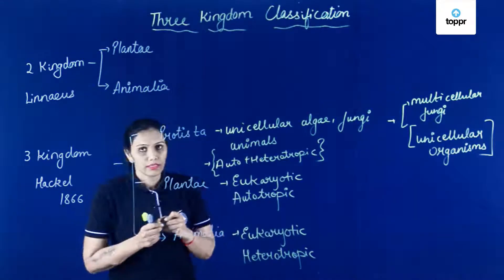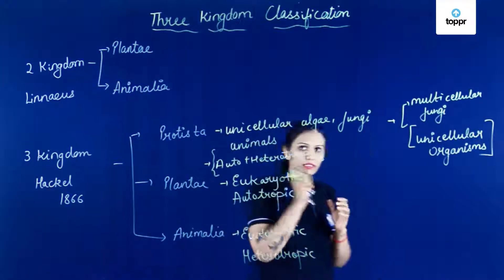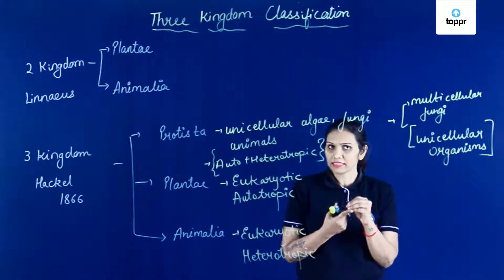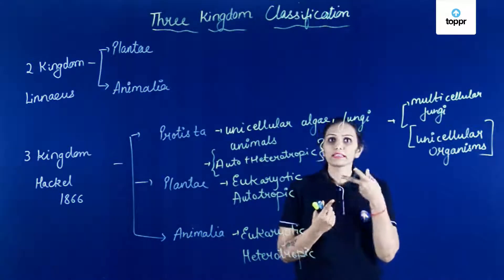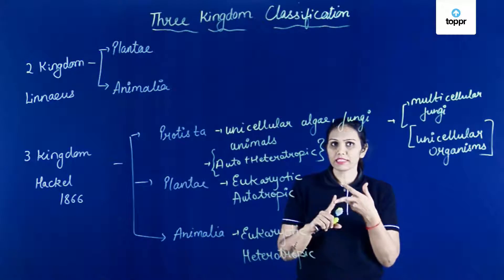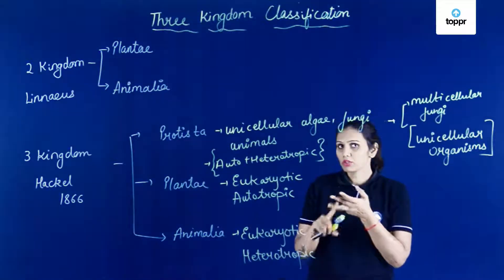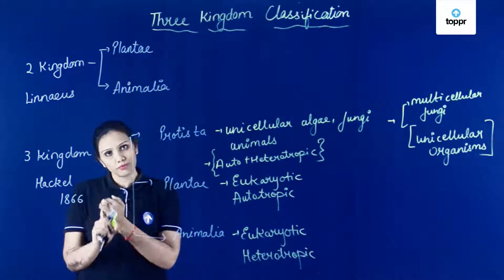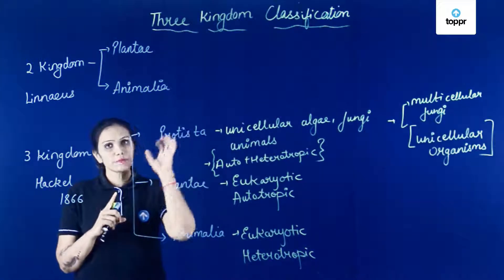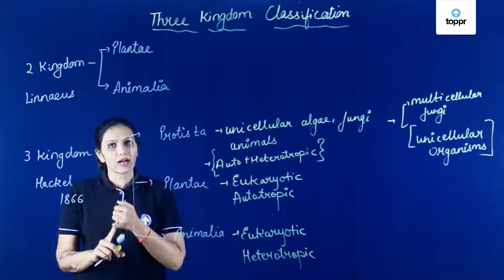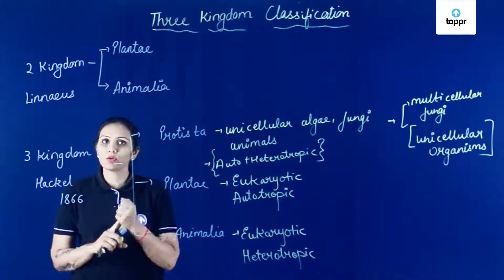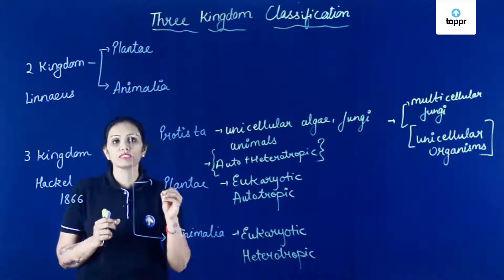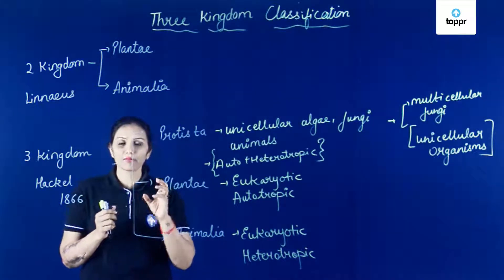Aur Kingdom Protista ke andar rakhe unhone woh forms — Euglena, slime molds — which are both auto and heterotrophic in nature. So in this session, we talked about three kingdom classification, jo ki Haeckel ne diya tha in the year 1866. Linnaeus ne kya kiya tha? Two kingdoms diya tha — Plantae and Animalia. Us classification ke andar hum baat nahin kar pa rahe the of the unicellular forms. In this way, he proposed Protista — iske andar unicellular algae, unicellular fungi ko rakha gaya aur unicellular animals ko rakha gaya.